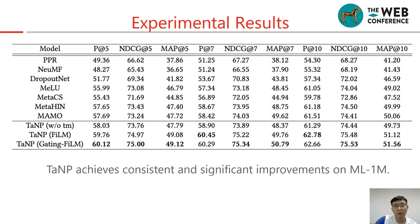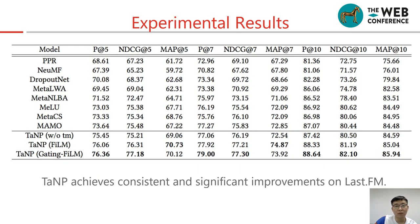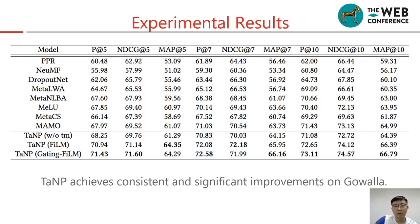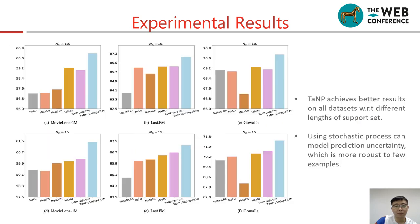This is the result on ML 1 million. From it, we can observe that our model achieves consistent and significant improvements. This is the result on LastFM. This is the result on Gowalla. This is an analysis of different lengths of support sets. From it, we can observe that our model achieves better results on all the sets with respect to different lengths of support sets.